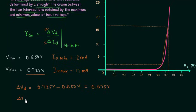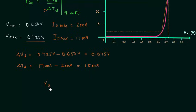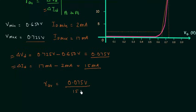Now I will calculate ΔId. ΔId is equal to 17 milliamps minus 2 milliamps, and this is equal to 15 milliamps. So the average AC resistance is equal to ΔVd divided by ΔId, which is 0.075 volts divided by 15 milliamps, and when you solve this it is equal to 5 ohms.